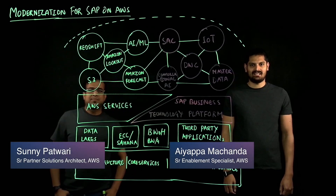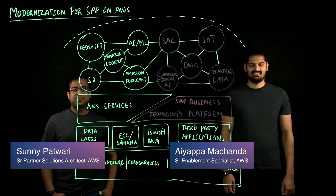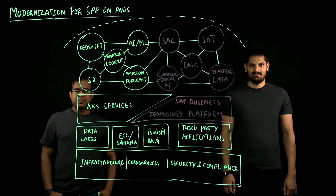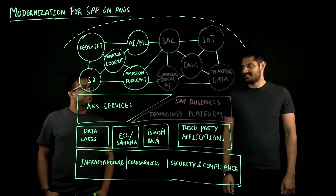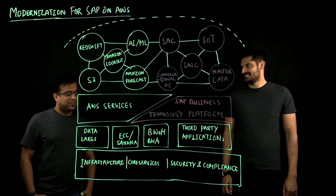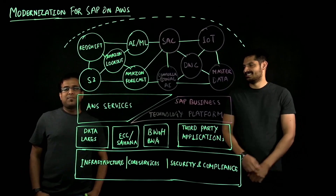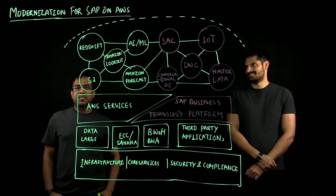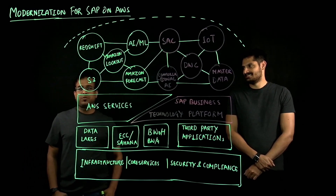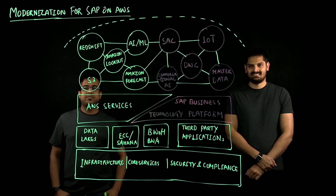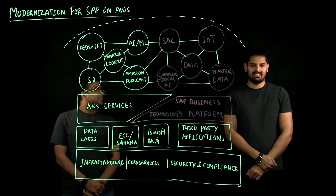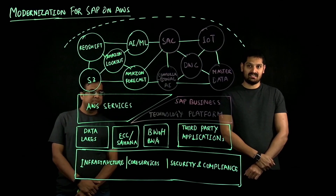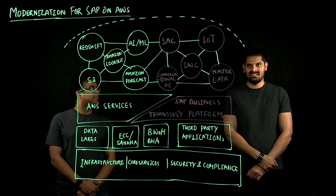Hello everyone, my name is Ayipa Machanda, Senior SAP Specialist at AWS. With me I have Sunny. Hello everyone, my name is Sunny Bhatwari, SAP Technical Alliance for North America. I work closely with SAP and AWS. Today we're going to talk about modernization for SAP on AWS.